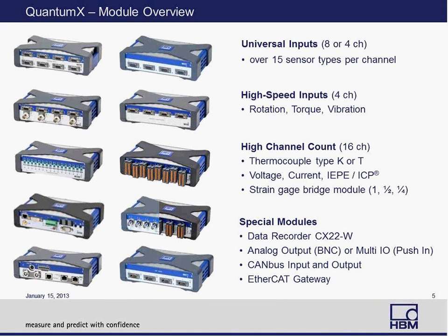There are other modules that address high channel count. The Quantum X Mx1615 falls in this category. We released the 1601 before, which was primarily targeted toward thermocouple or temperature acquisition. Now we have released the 1615, which is geared more towards experimental stress analysis. In addition, we have special modules available, such as a data recorder module called the 622W. If you did not want to use a computer or laptop, you could pair one of the Quantum X DAQ modules with a 622W and have a standalone system. Quantum X also supports CAN modules for both inputs and outputs, and for real-time or deterministic applications, it also offers an EtherCAT gateway.